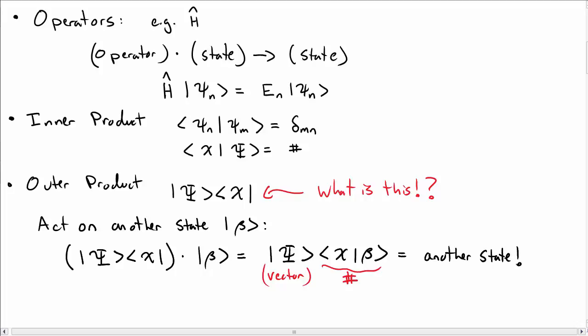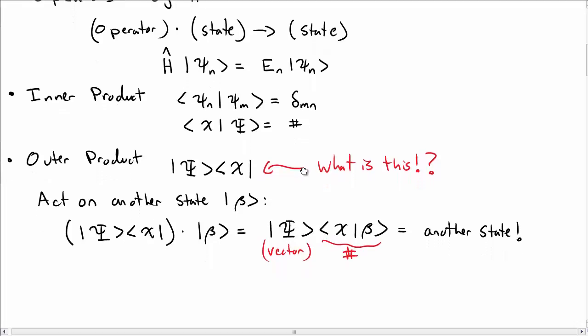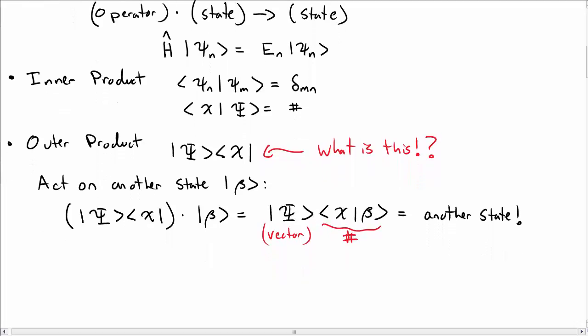So I took something, operated on a state, and got back another state. Well, that's what operators do. Operators turn states into other states. And so the outer product, this weird object that I had up above, is really just an operator in disguise.